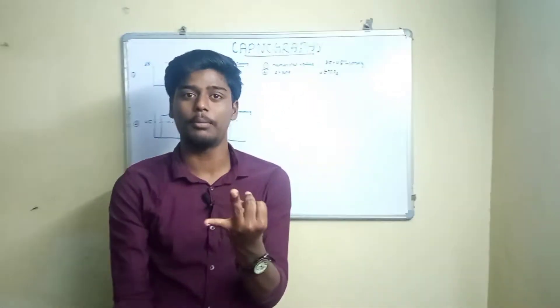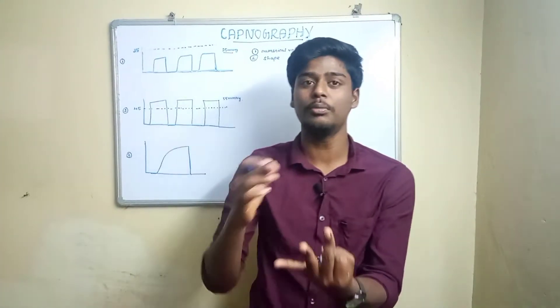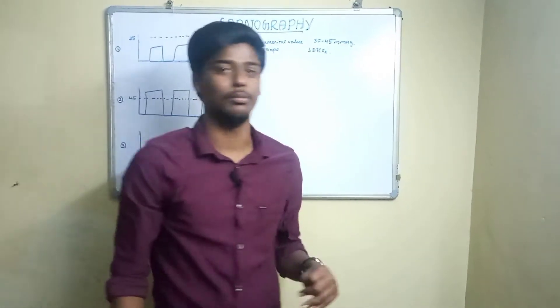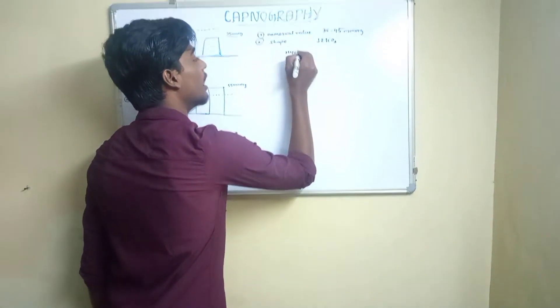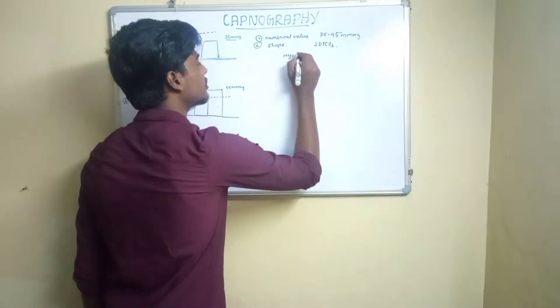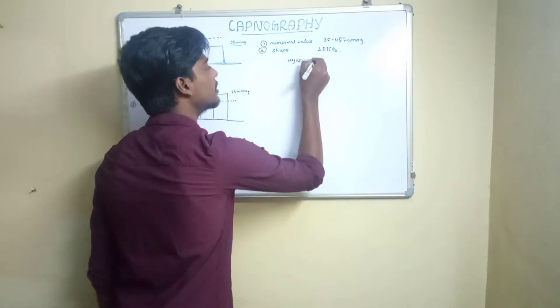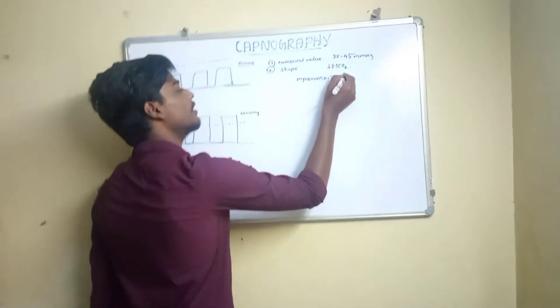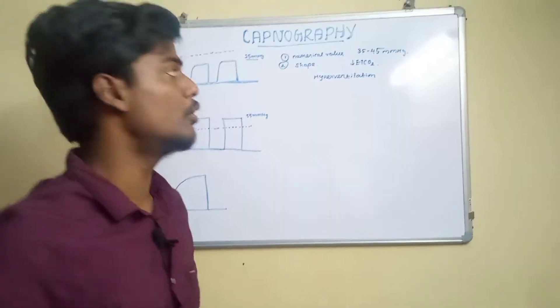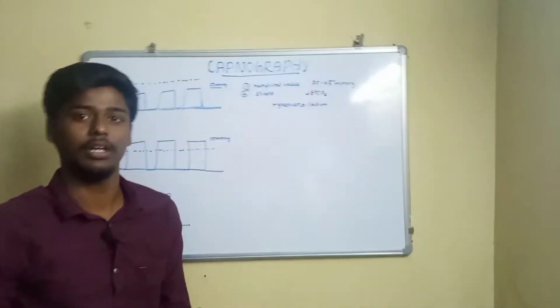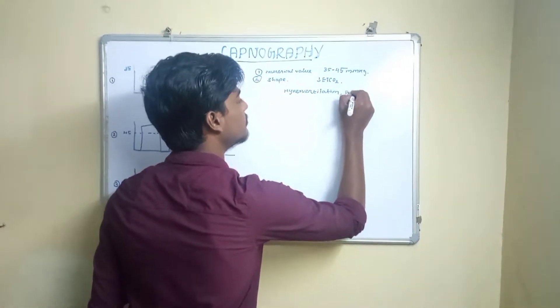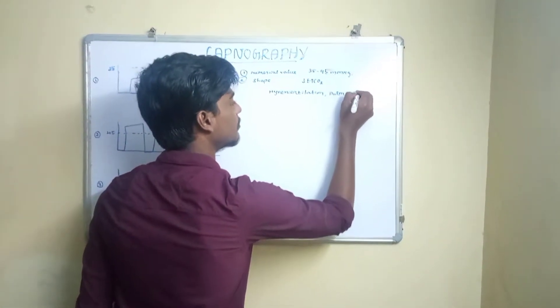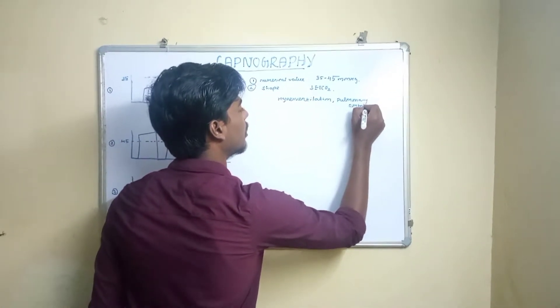Metabolism is less — ETCO2 value is less. Circulatory system is less — ETCO2 value is less. Ventilation is less — ETCO2 value is less. In hyperventilation, CO2 is less, so ETCO2 value is less. Ventilation is also less in pulmonary embolism. In pulmonary embolism, ETCO2 is less.